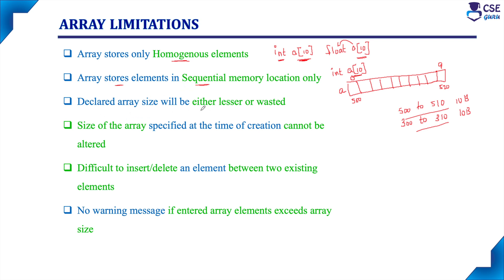Next, the declared array size will either be lesser or wasted. Suppose if I have declared int a of 20, I have allocated 20 memory locations because I'm not sure about the size. For safer side, I allocated 20 locations but used only 5 elements, storing them from a[0] to a[4]. The remaining 15 memory locations are wasted — that memory will not be used for other variables or programs because it is allocated for this array, whether we use it or not. So here memory is wasted.